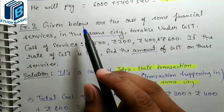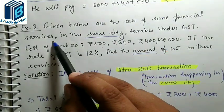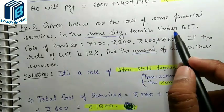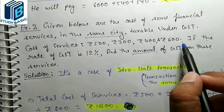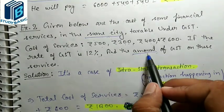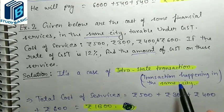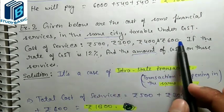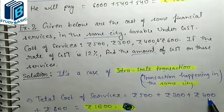I hope the first example is crystal clear. Now let's look at example number 2. Given below are the costs of some financial services in the same city — so again same city means intra-state transaction, taxable under GST. The cost of services are Rs. 500, Rs. 300, Rs. 400, and Rs. 600. The rate of GST is 12%.